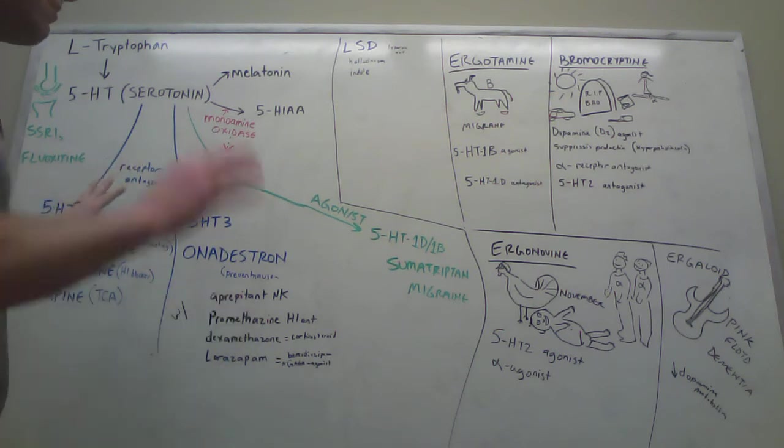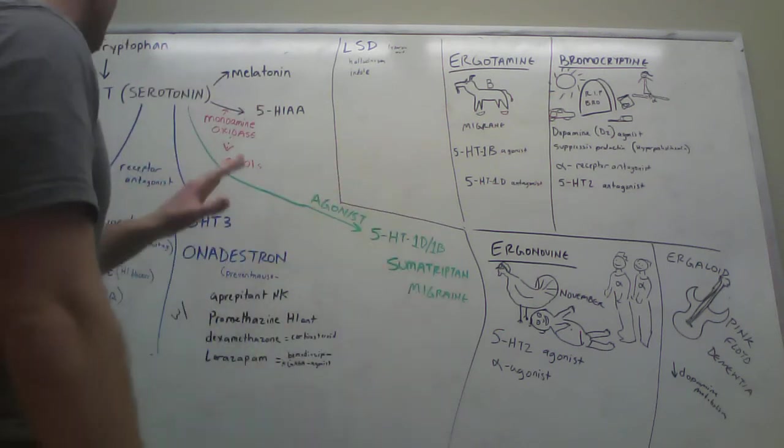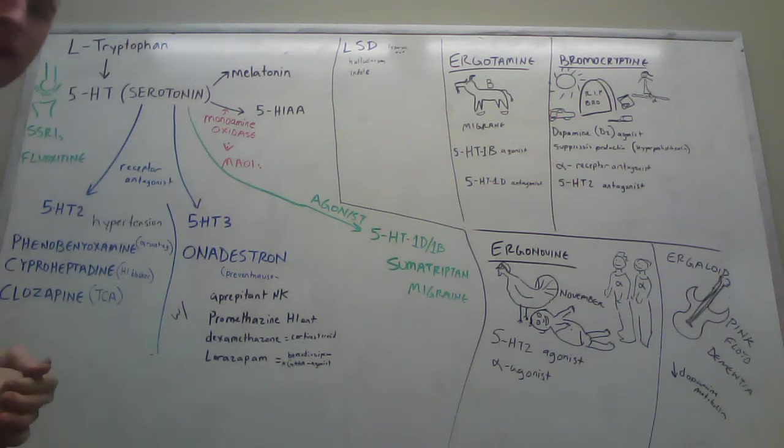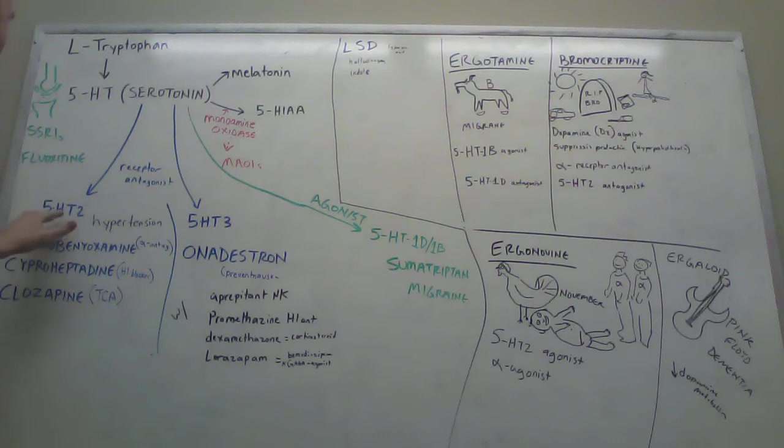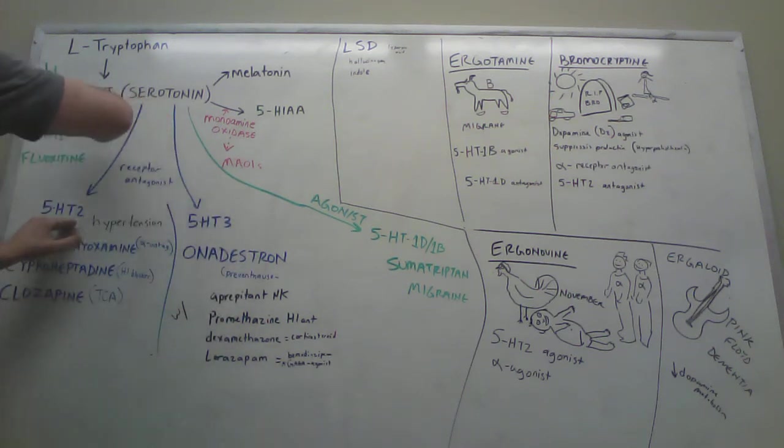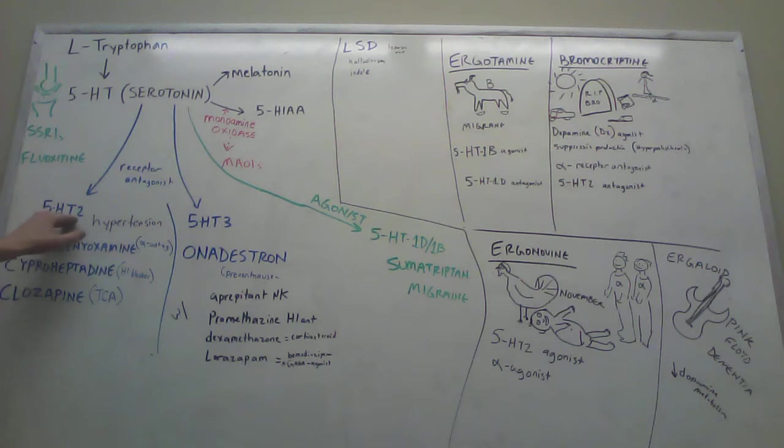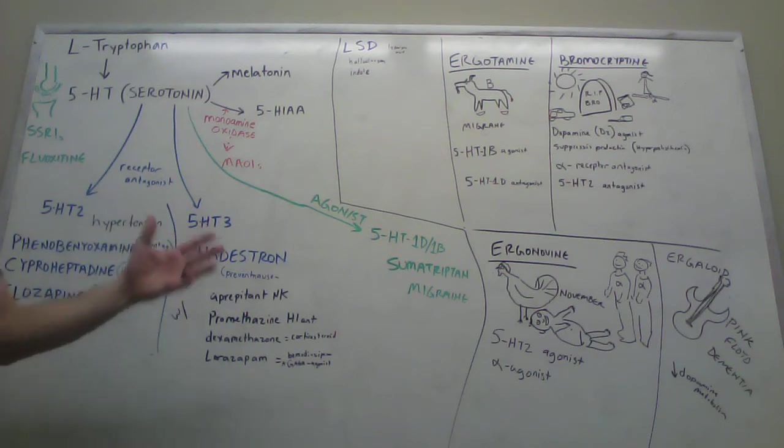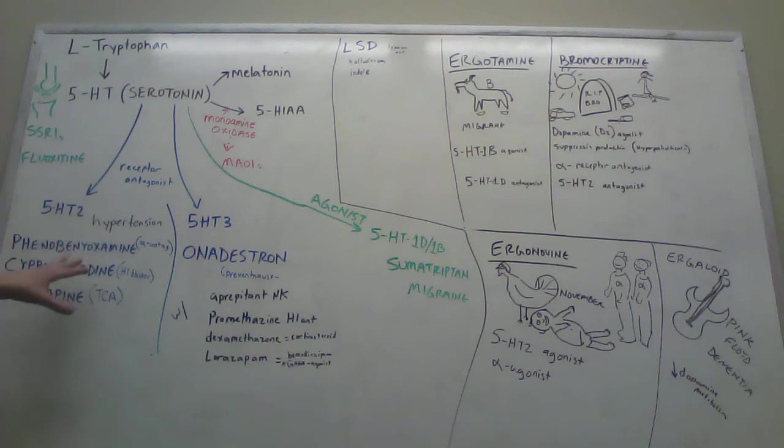Now there are some agonists, which are the ergot alkaloids, and some antagonists. We're going to talk about the antagonists first. There's all these receptors called 5-HT something receptors. We'll talk about the 5-HT2 receptor antagonists, which are typically used to treat hypertension. Maybe you could think 5-HT2 and hyper-hypertension.